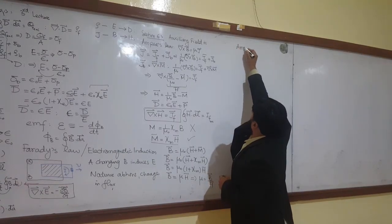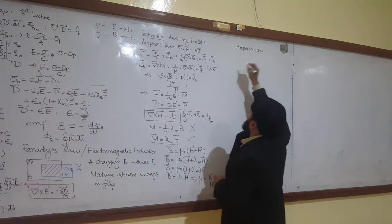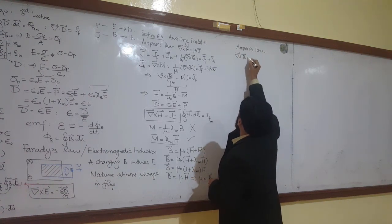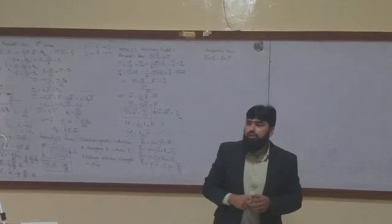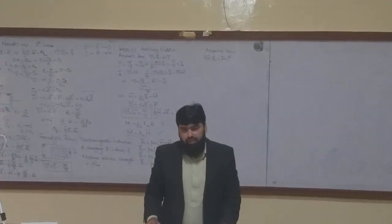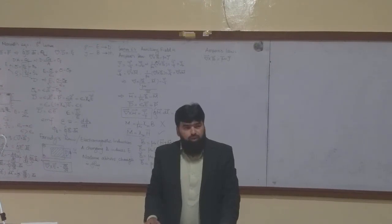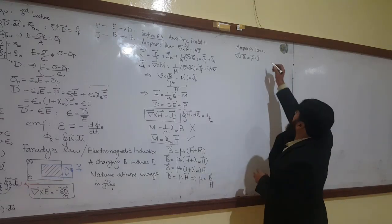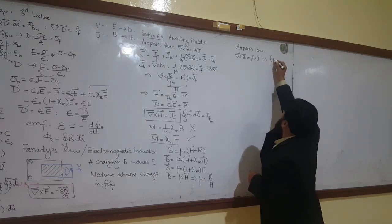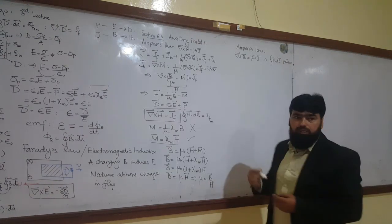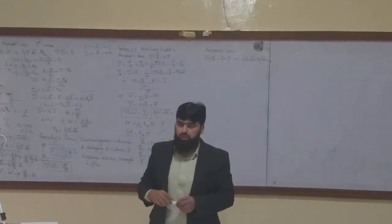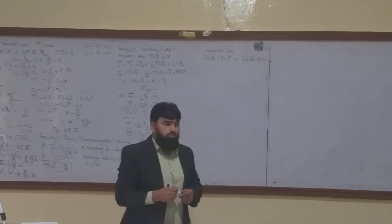So the Ampere's law, we wrote del cross B equals mu naught J. Everything was perfect. And Ampere's law was doing well. But when the problem of solving the current issue in a capacitor came in, Ampere's law failed. And in differential form, I can write this thing that closed loop integral of B dot DL equals mu naught I enclosed. And it is pretty much understood in integral form.